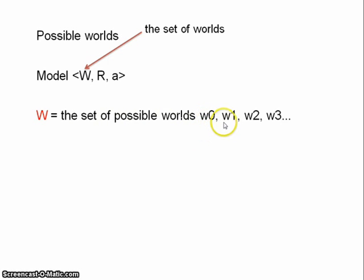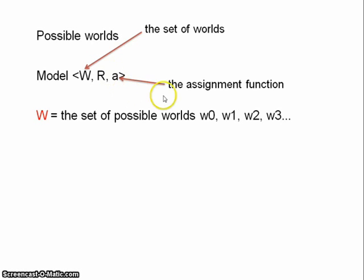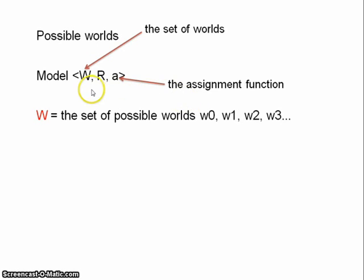In modal logic, when using possible worlds semantics, we think of W as the set of possible worlds. Each individual world can be labelled W0, W1, W2, W3, and so on — sometimes you see them labelled W, V, U, X, etc. W is the set of possible worlds. And A here, that's just the assignment function. In modal logic, the assignment function assigns truth values to propositional variables within each individual world. So let's say W0 is the actual world and P stands for 'pigs can fly.' The value of P at world W0 is 0 — P is false at W0.